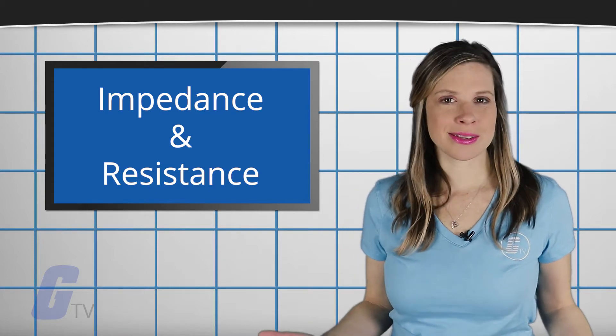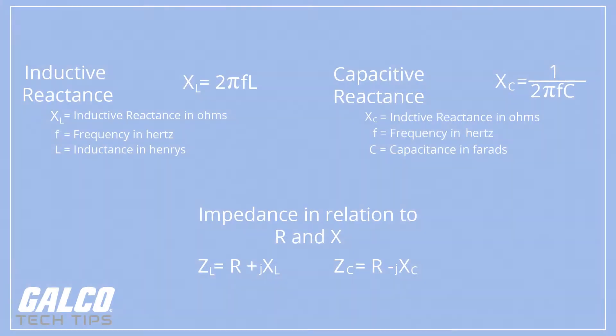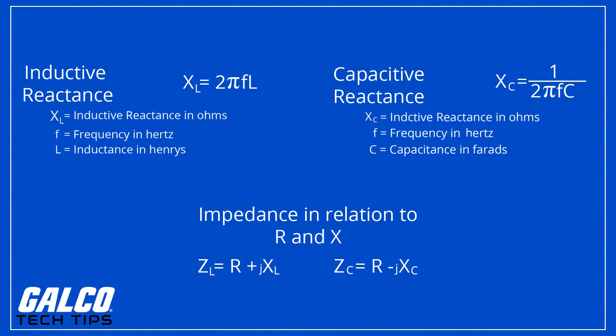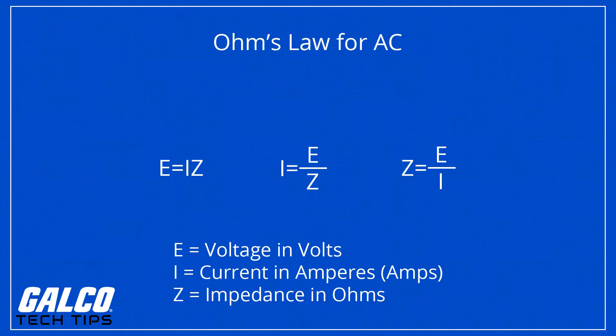In many ways, impedance is sort of like a more general version of resistance. For example, impedance is a value which shows the amount of resistance that a component has to the flow of electrical current. And just like resistance, the unit of measure used for impedance is ohms.